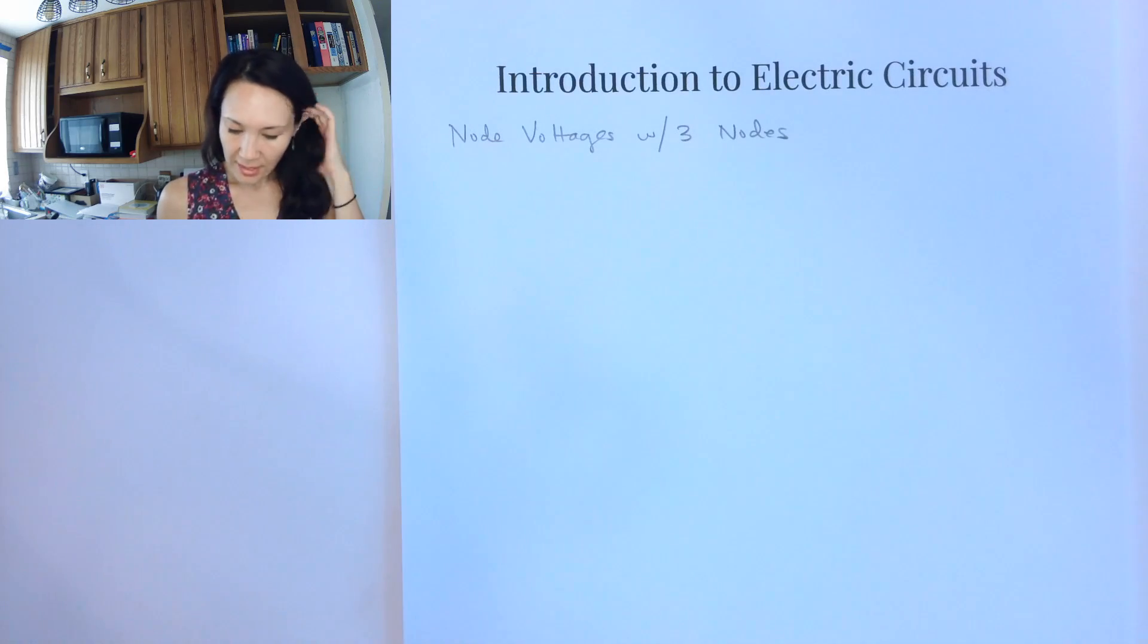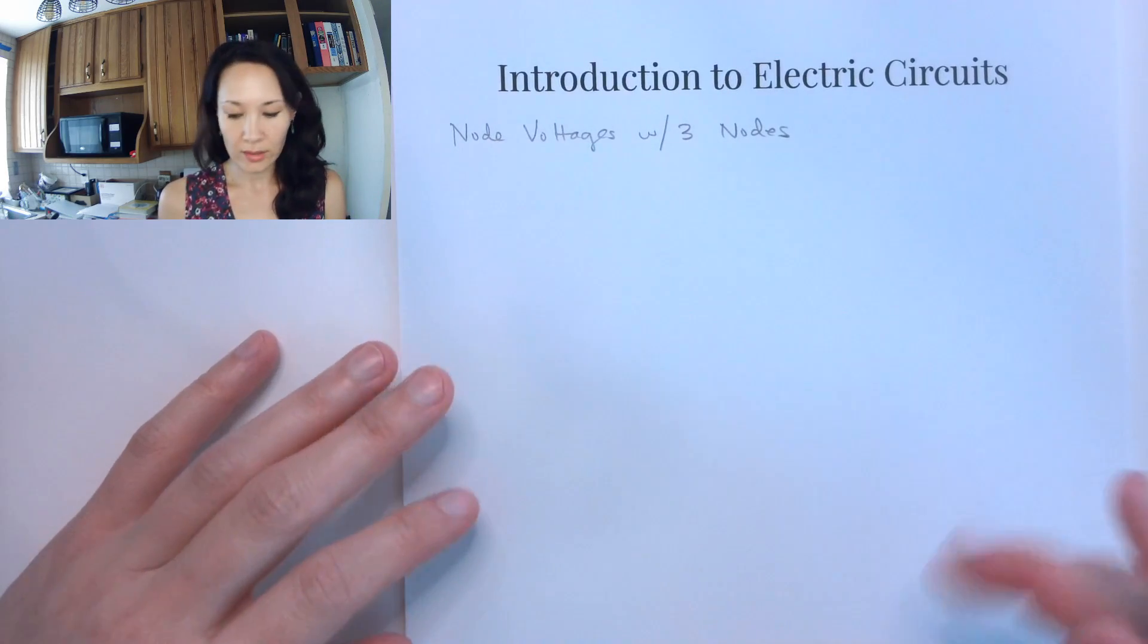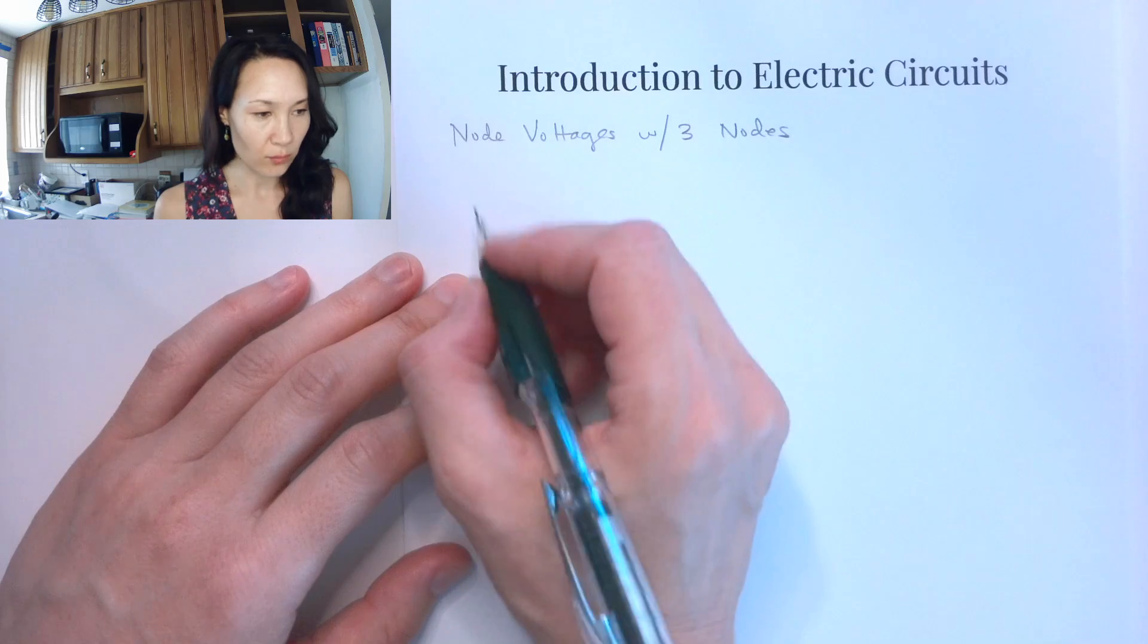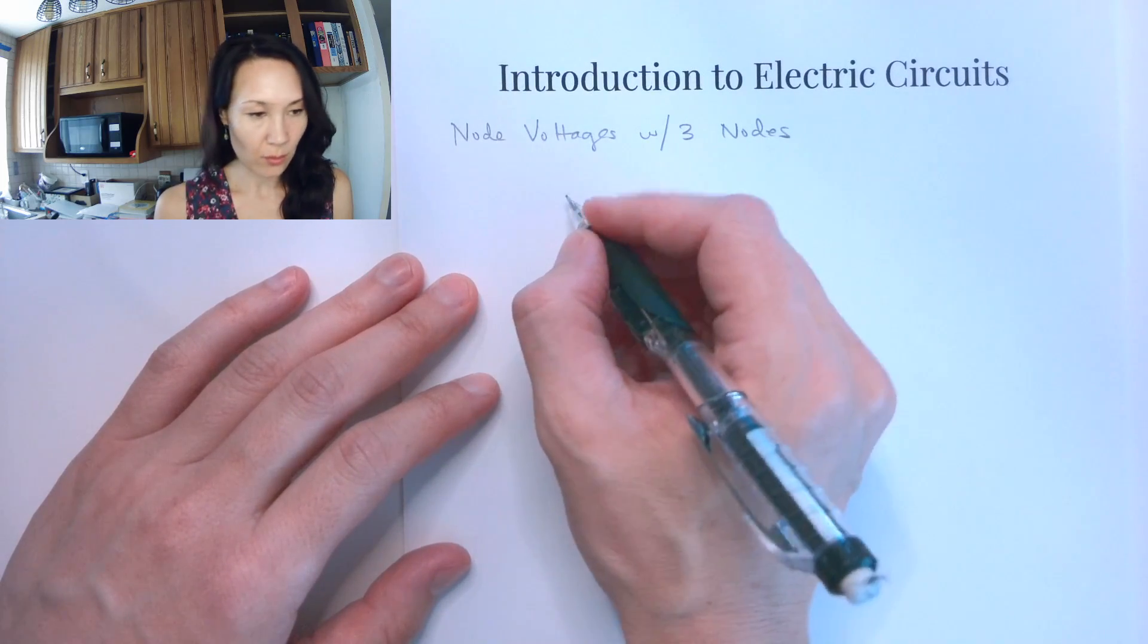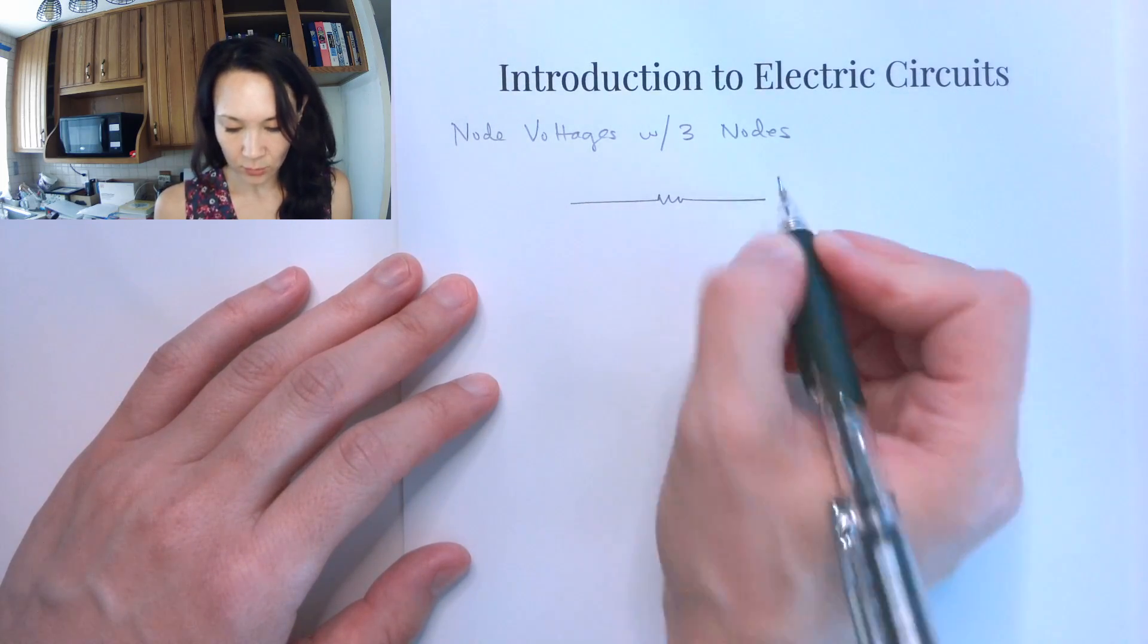We've seen a few examples now of circuits that have one and two nodes and how to use the node voltage method to solve. Now I want to show you a circuit that has three nodes.